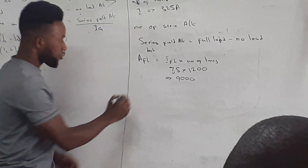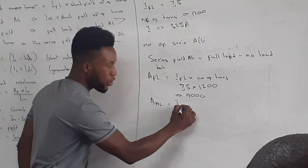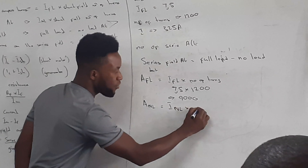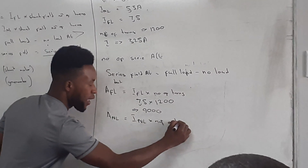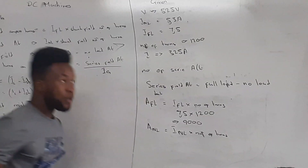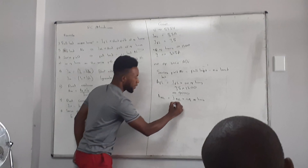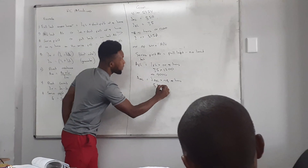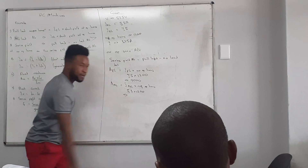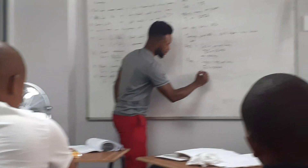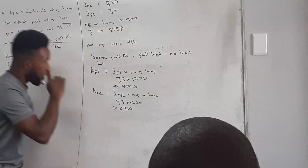To calculate AT_no_load, we use: I_no_load multiplied by the number of turns. I_no_load = 5.3 amps multiplied by 1,200 turns gives us AT_no_load = 6,360.